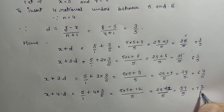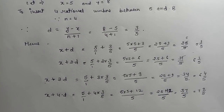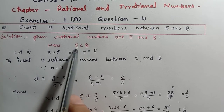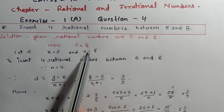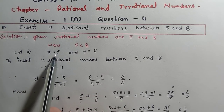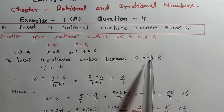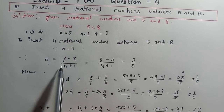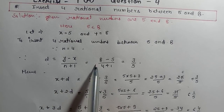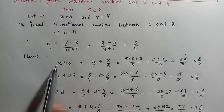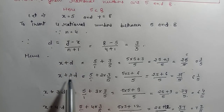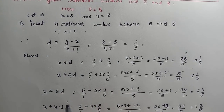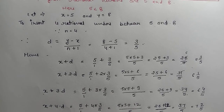So you see, whenever you have to find 4 rational numbers and 2 rational numbers are given, we solve this way: check which is less than and which is greater than. Here 5 was less than 8, so let x equals 5 and y equals 8. The formula is d equals (y minus x) divided by (n plus 1). Once we have d, for the first rational number do x plus d, for the second do x plus 2d, for the third x plus 3d, for the fourth x plus 4d, and so on.